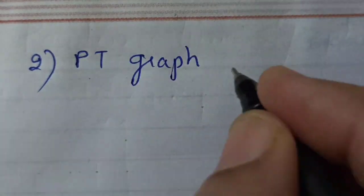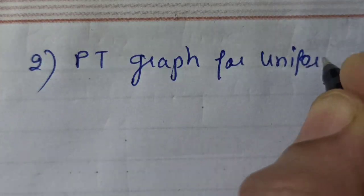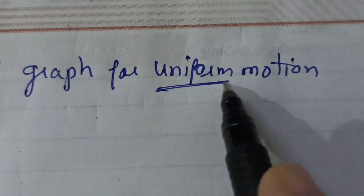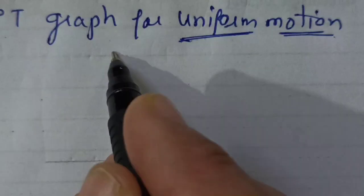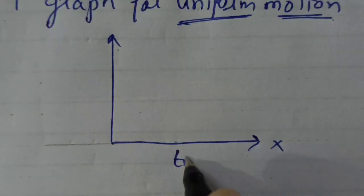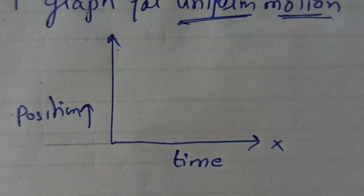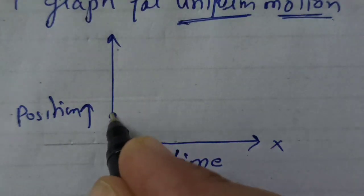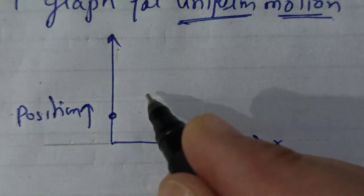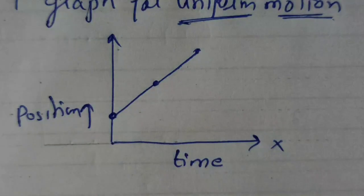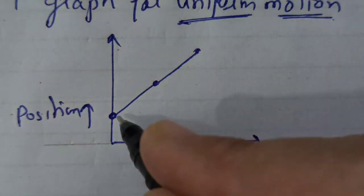Graph for uniform motion. Here your motion is uniform, meaning equal distances are covered in equal time intervals. On the PT graph, the y-axis is position and the x-axis is time. As the body moves, it covers equal distances in equal time intervals, so the result is a straight line — equal distances in equal time interval gives a straight line.